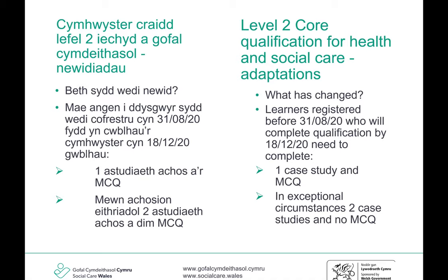What has changed? The number of assessments learners needed to complete was temporarily reduced. Learners registered before the 31st of August 2020, and who will complete their qualification by the 18th of December 2020, only need to complete one case study and a multi-choice question test, or if they are in the combined pathway, two case studies and one multi-choice question test. In exceptional circumstances, learners can complete either two case studies for the single pathway, or three case studies for the combined pathway, and no multi-choice question test. This was put in place to make sure learners were not disadvantaged as a result of COVID-19 restrictions, particularly where assessment centres had been closed.